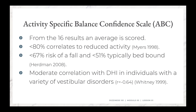People scoring 50% or less are typically bed bound, which is clinically interesting — sometimes patients will walk into the clinic and score around 48%, meaning their perception is significantly off. There is also a moderate correlation between the Activity Specific Balance Confidence Scale and the Dizziness Handicap Inventory in individuals with a variety of vestibular disorders.